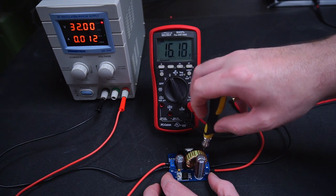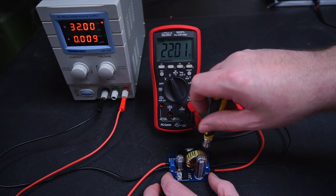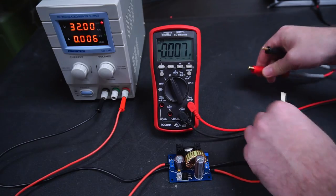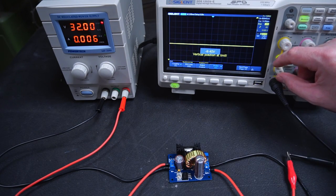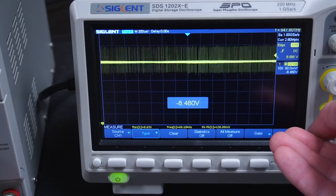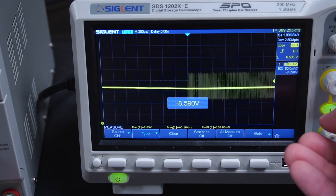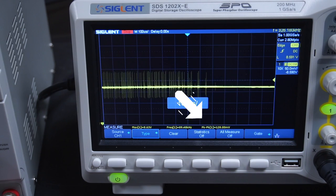So designing a buck converter is as simple as following the manufacturer's suggested schematic right? Well let's replace my meter with my scope and take a closer look at the output from my buck converter. Upon closer inspection we can see there is quite a bit of noise with a peak to peak value of 128mV.